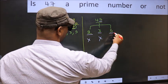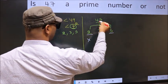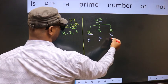Next number, 5. Last digit is neither 0 nor 5. So, this is not divisible by 5.